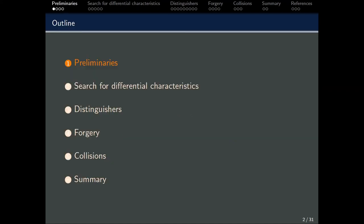This is the outline of this talk. We will start off with some preliminaries, followed by the introduction of constraint programming and the parameters that we have used, so that we can find good differential characteristics for the ASCON permutation. Then, these differential characteristics are used to obtain distinguishers, forgeries, and collision results for ASCON.